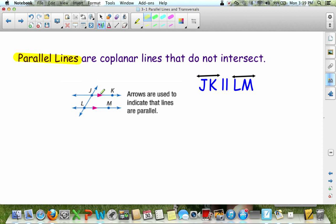So here we can say JK is parallel with LM. And these little arrows here mean that these two lines are parallel. And instead of writing out the word parallel, you can use this symbol to show parallel. And feel free to pause the video any time if you need more time for writing.